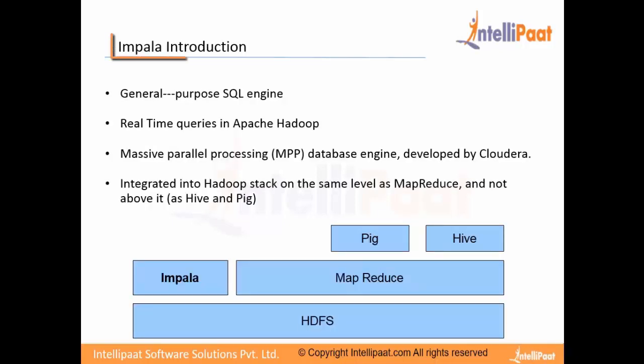First of all, let's have some introduction to what Impala is. Impala is a general purpose SQL engine developed by Cloudera. Cloudera felt the need to bridge the gap where people were using Hive to do querying on Apache Hadoop, or the data stored on HDFS, and were having some latency due to the execution of MapReduce jobs. Impala is a real-time query engine. It utilizes the massively parallel processing database engine developed by Cloudera. It integrates into the Hadoop stack on the same level as MapReduce, and not above it as Hive and Pig are.